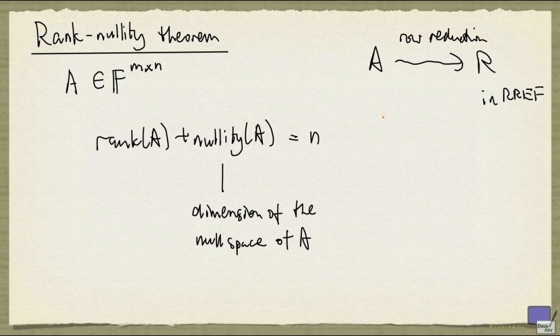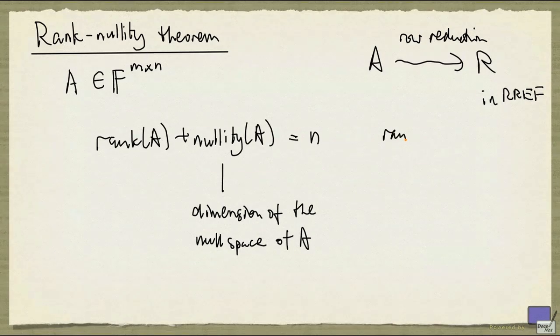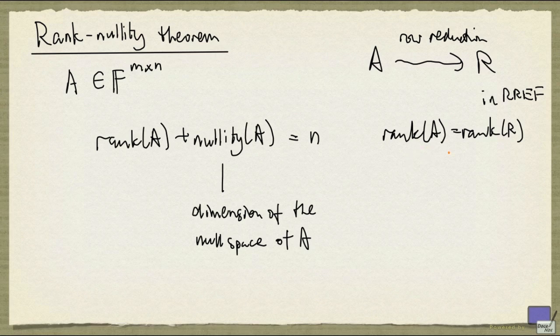So what we can say here is the rank of A is going to be equal to the rank of R, because they have the same row space, and so the dimensions of the two are the same.